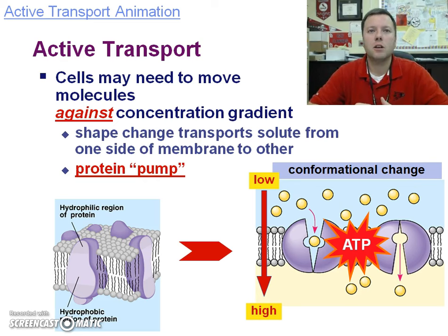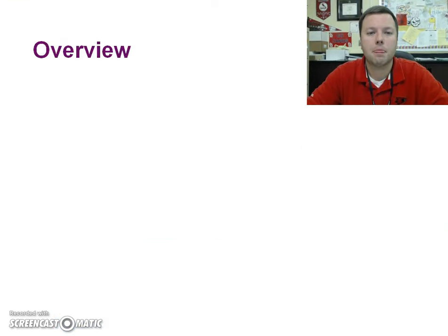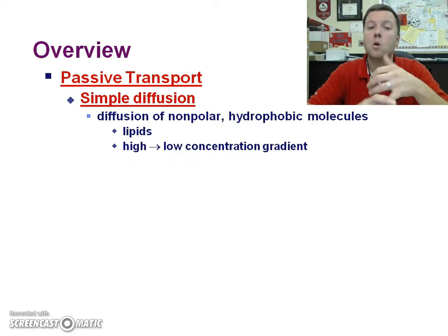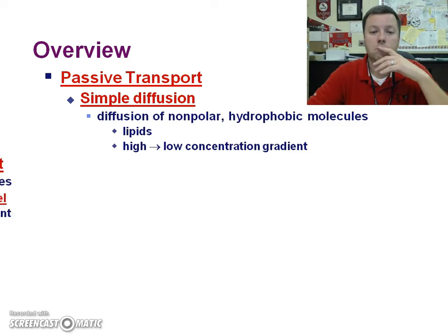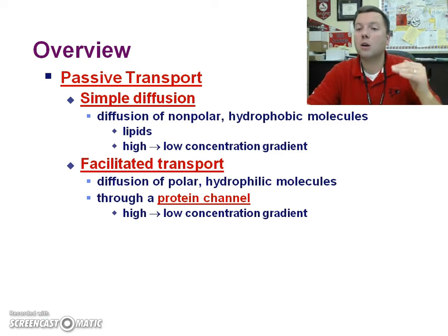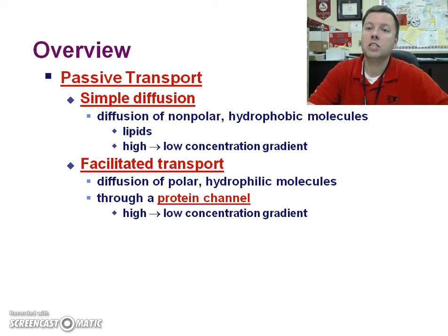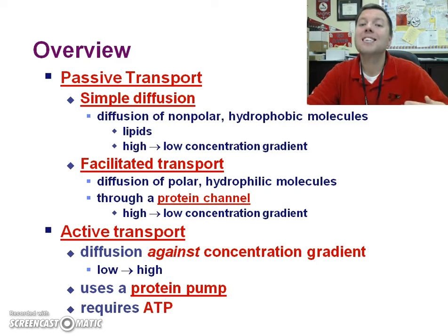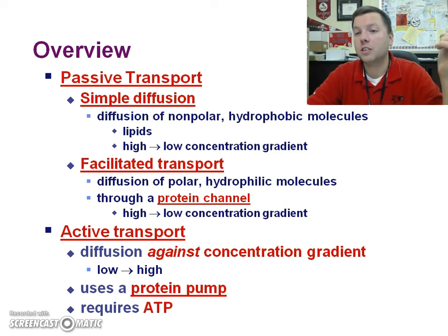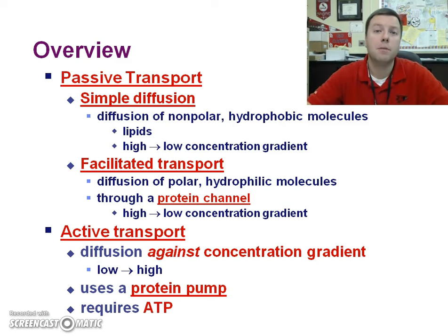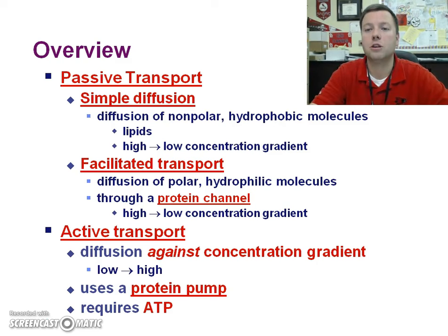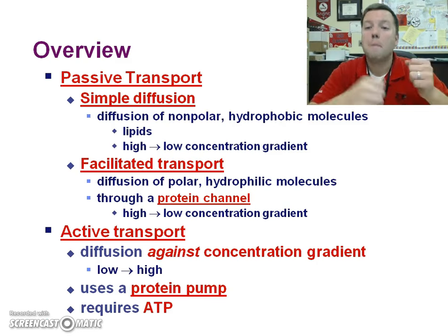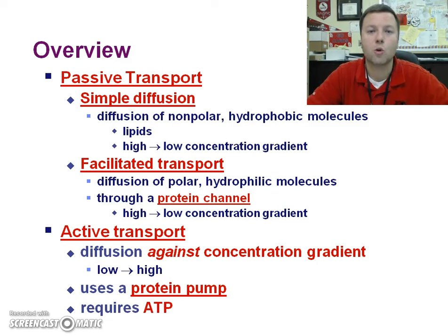Let's do an overview. Passive transport has more than one kind. There's simple diffusion, where small non-polar things move through directly. There's facilitated diffusion — still high to low concentration, but needing help from a protein channel or carrier protein. Active transport is going against the concentration gradient, from low to high, and requires energy. Think of it as: it's easy to slide down a slide, but going up takes more energy. Passive transport is like getting on a raft and going downstream — the concentration gradient takes you. Active transport means turning around and paddling against the current.